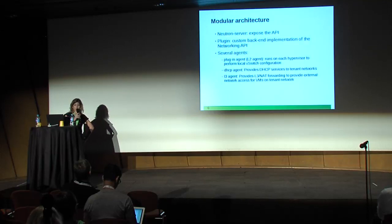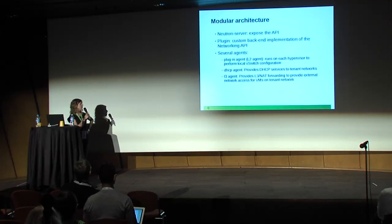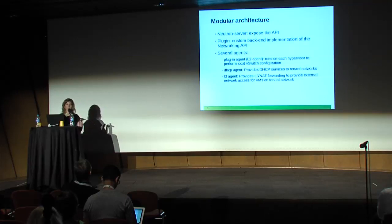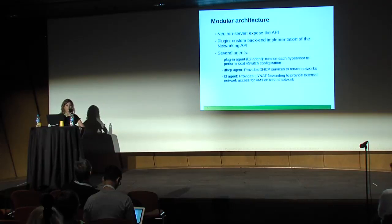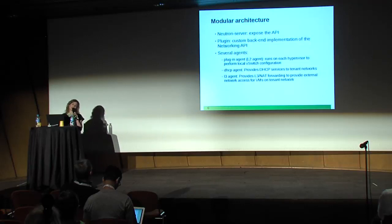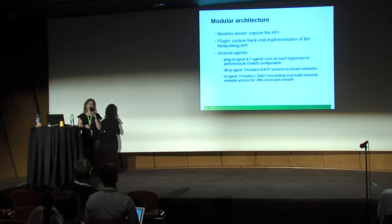The default plugin is ML2, but there are also lots of vendor plugins like Cisco, Arista, and Midonet. Neutron also uses several agents: the plugin agent, which resides on the compute host and configures the local virtual switch; the DHCP agent, which configures DHCP services; and the L3 agent, which provides L3 connectivity and handles connectivity to the external world.